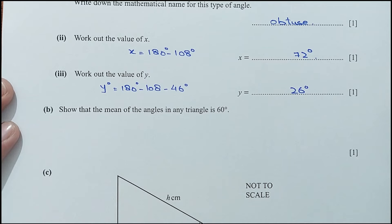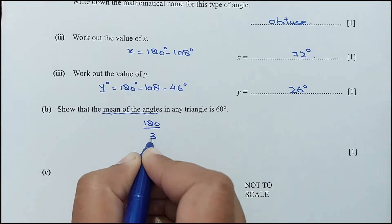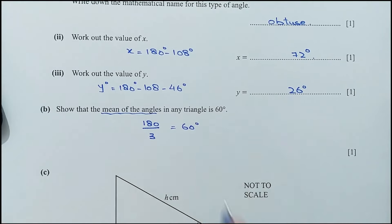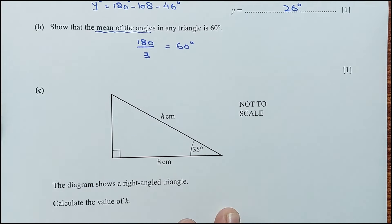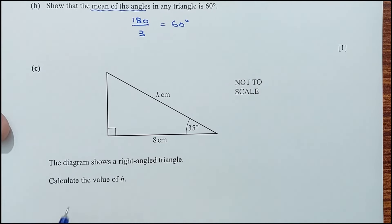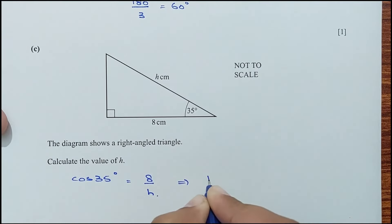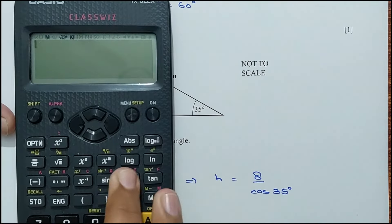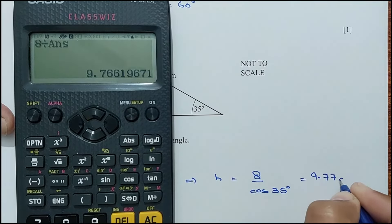Part B: show that the mean of the angles in any triangle is 60°. The sum of all angles in a triangle is 180°, divided by 3 angles gives 60°. Part C: the diagram shows a right-angle triangle. Using cos(35°) = adjacent/hypotenuse = 8/h, so h = 8 ÷ cos(35°) = 9.77 cm.